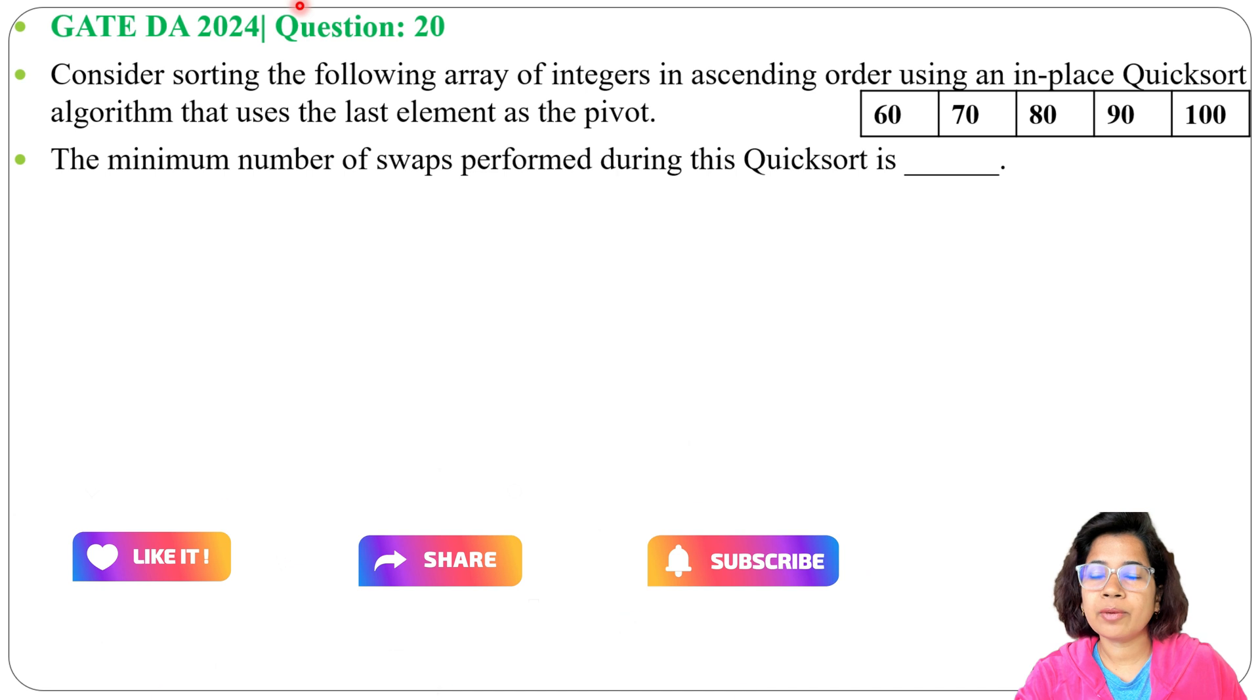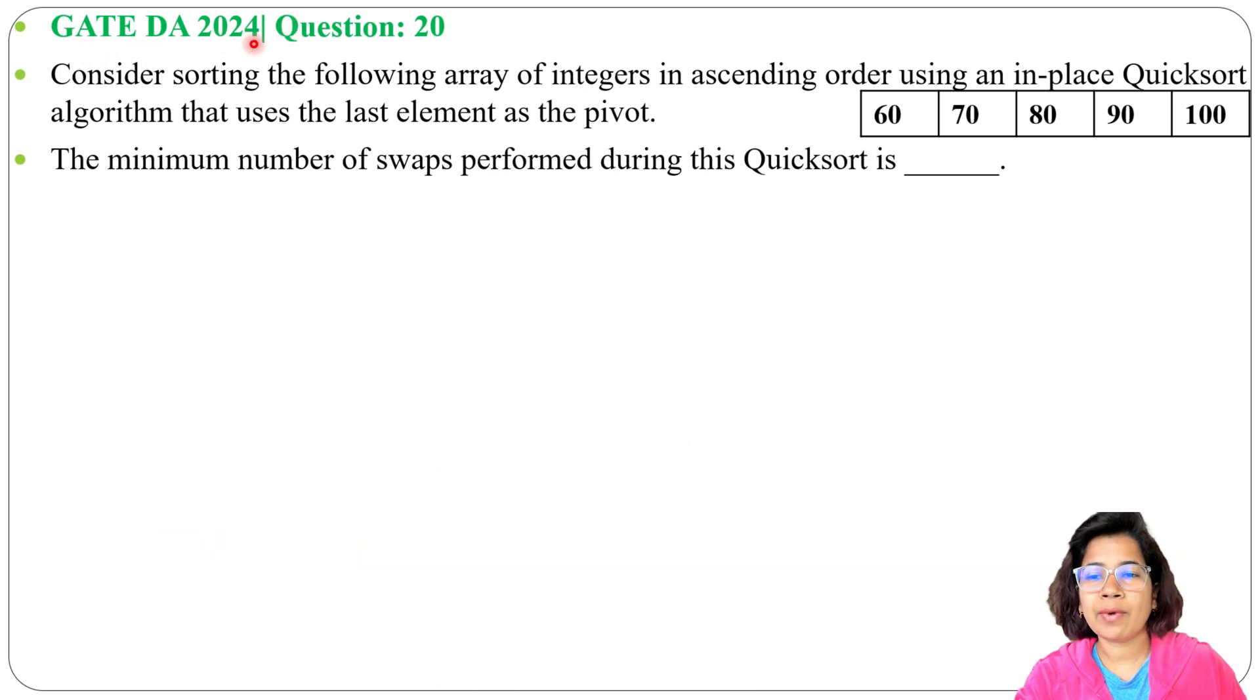Let's solve one previous question of Quicksort. This question was asked in GATE DA 2024, question number 20 excluding general aptitude and question number 30 including general aptitude. Consider sorting the following array of integers in ascending order using an in-place Quicksort algorithm.